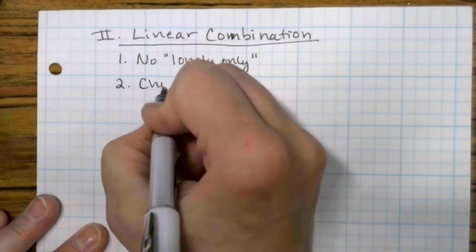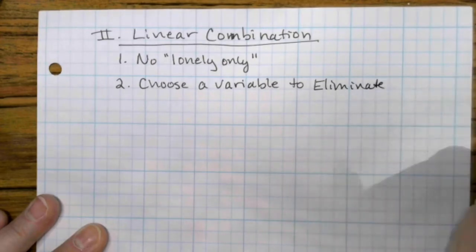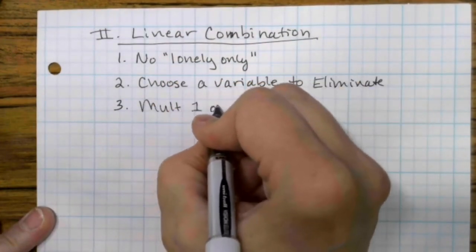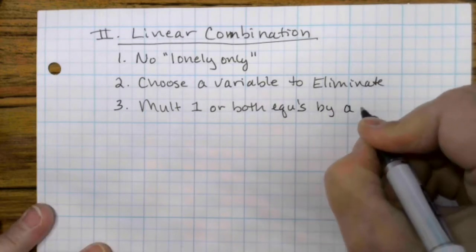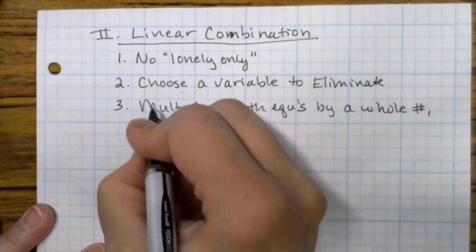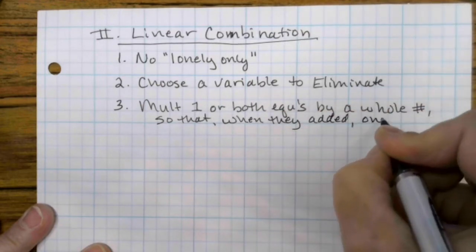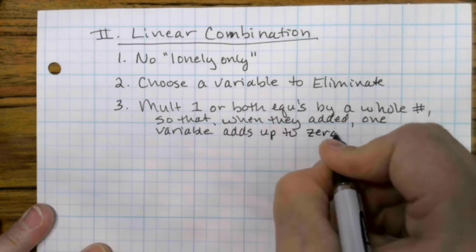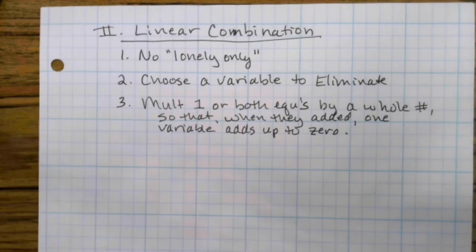Okay, so linear combination, you choose a variable to eliminate, x or y. Once you've chosen what you want to eliminate, you're going to multiply one or both equations by typically a whole number. So that when they are added, one variable adds up to zero. So linear combination has sometimes been called addition method because you change the equation so that when you add them, things go up to zero.